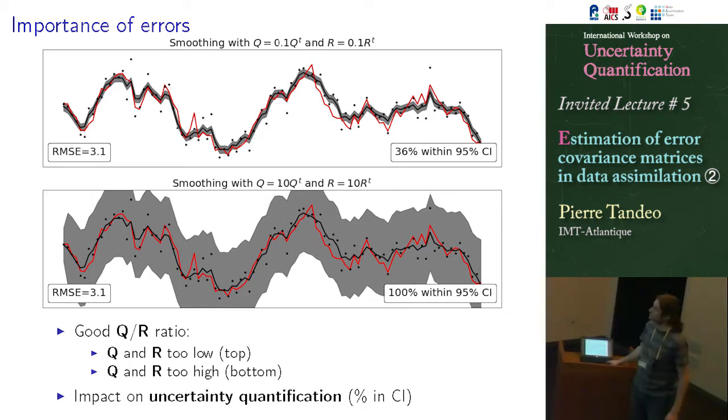So in this case, we are underestimating the 95% confidence interval. So here we have less than 40 percent of the red line inside the confidence interval. So this is very bad in data assimilation in practice. And here you are overestimating the confidence interval. And this is also very bad. So you can see in this very, just three slides just to show you how important it is to estimate, not only estimate the good ratio, but I think it's very important to estimate really the good value of Q and R.